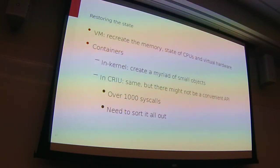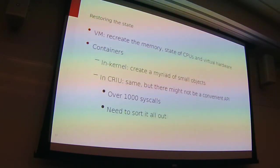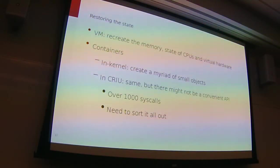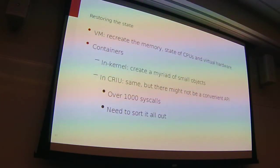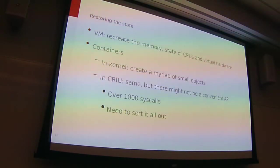Finally, restoring. For a VM, we recreate all the memory, state of the CPUs, and state of the virtual hardware. It's the same with containers — just many more smaller objects. In CRIU, what we do is start a process that reads all this data: here is the process tree, here is the memory map, here are the open files, here are the network connections. This process reads the information and does all the proper syscalls — fork, open, connect — and eventually it becomes that set of processes that we checkpointed. You also need to be very careful about the order in which you recreate those processes. You need to solve the ordering — you cannot create a child process before you create a parent process.